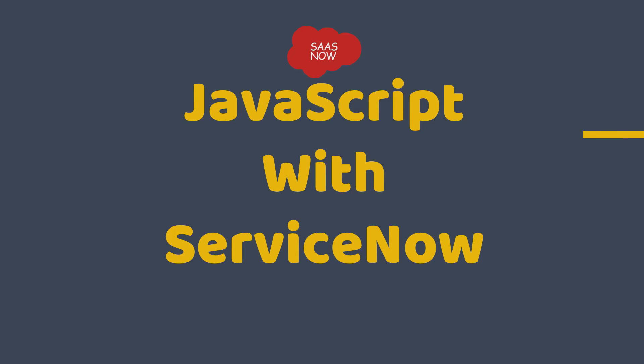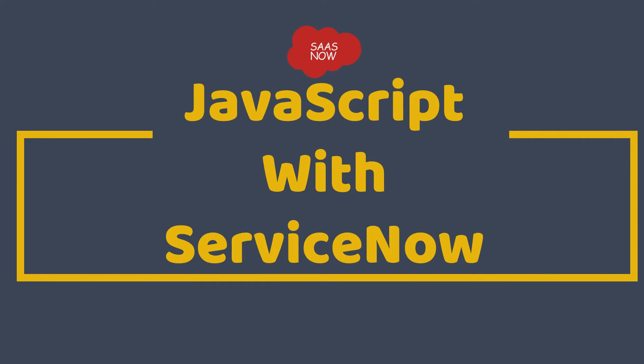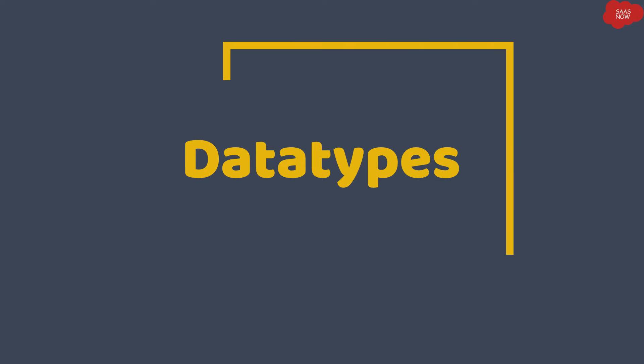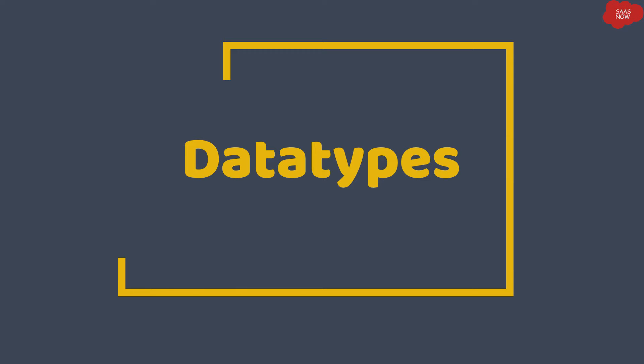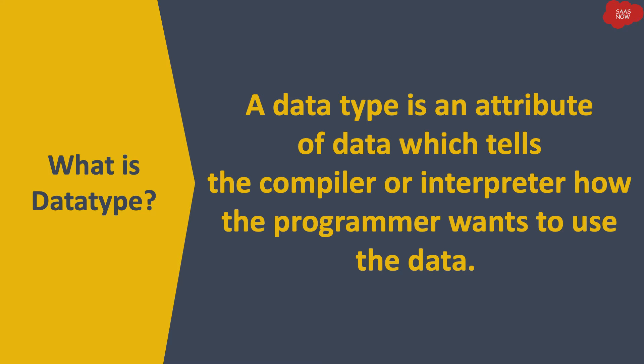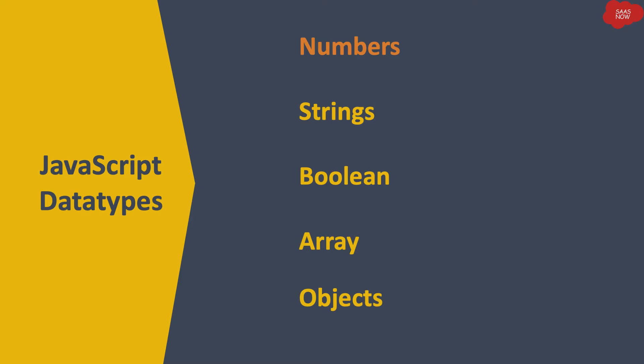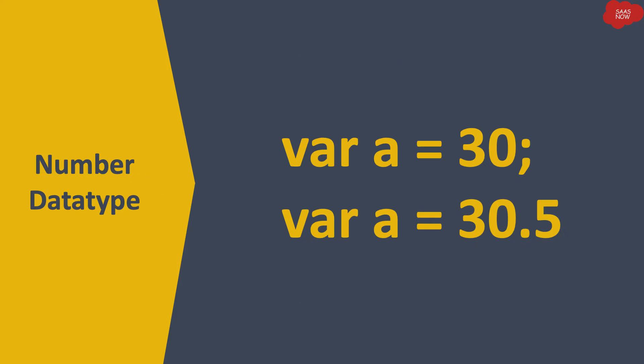This is part of training for learning JavaScript with ServiceNow, and the next topic is data types in JavaScript. A data type is an attribute of data which tells the compiler or interpreter how the programmer wants to use the data. JavaScript variables can store different types of data like numbers, strings, booleans, arrays, and objects.